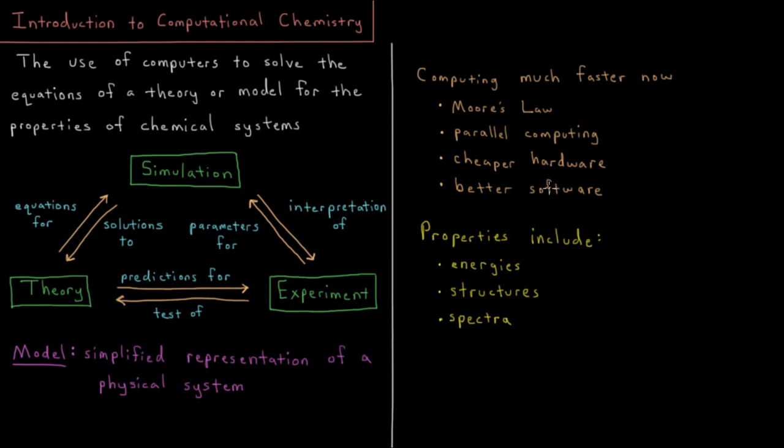The field of algorithms and how to write software, and better theories with clever mathematical approximations, we're getting much better at writing better software that is able to do these simulations using less processing power. So those four together, combined with many other factors, have made simulation really a central part of science now.